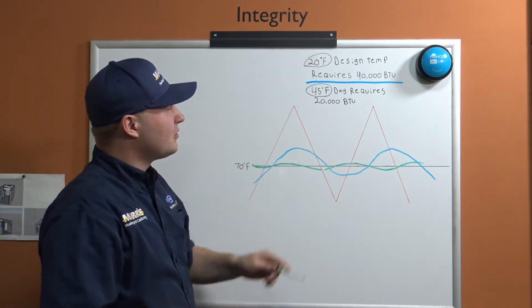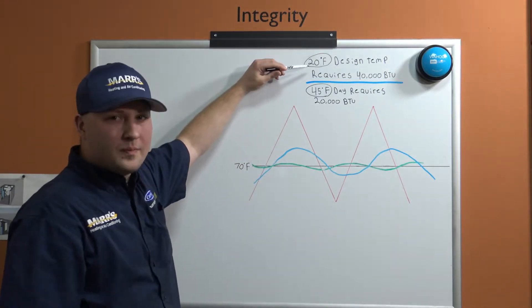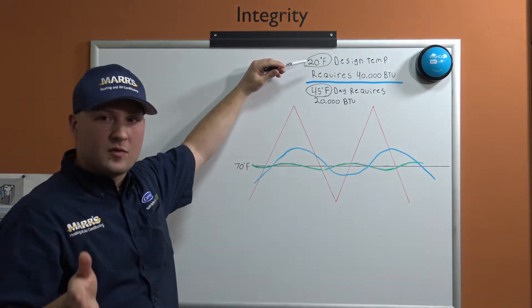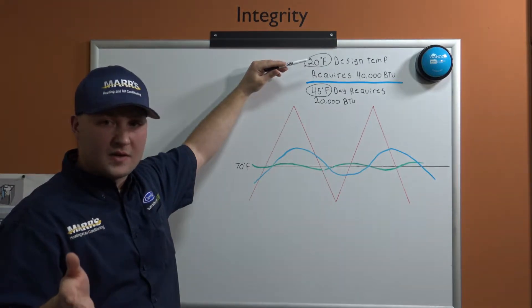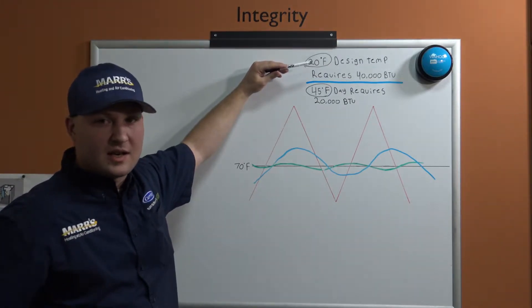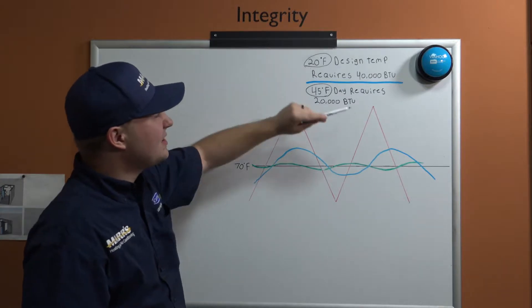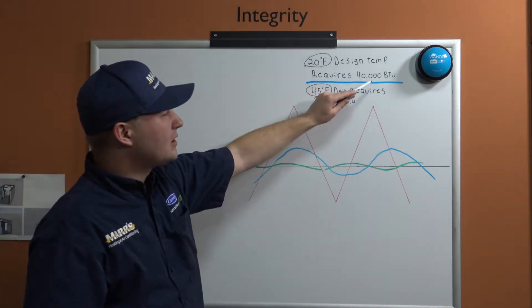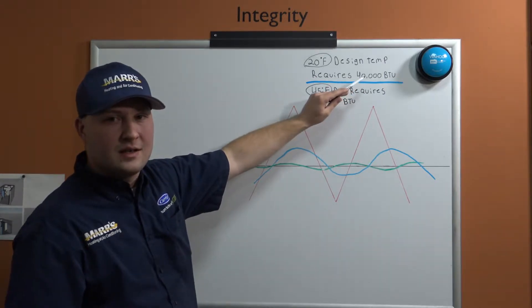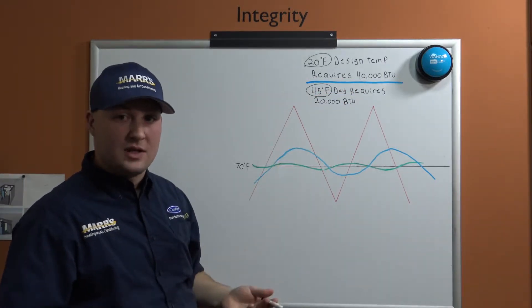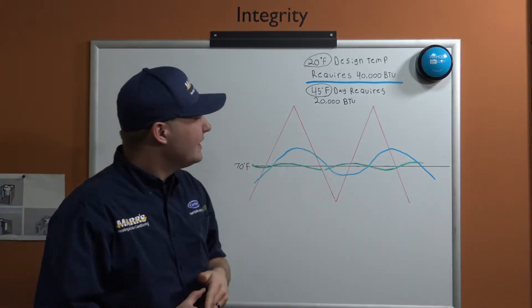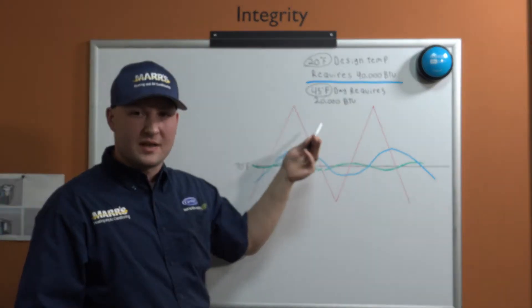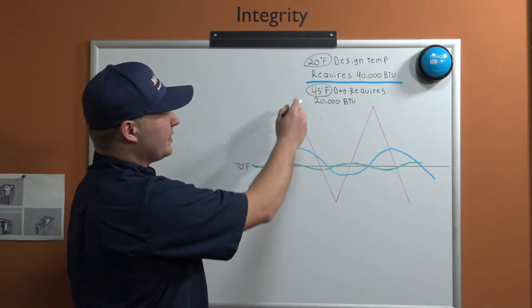At 20 degrees, your home—depending on insulation levels, the types of windows you have, how leaky the house is, how much air infiltration is getting in—let's say that this house at 20 degrees Fahrenheit requires 40,000 BTUs of heat to maintain 70 degrees indoor temperature. At 45 degrees that house only needs 20,000 BTUs to maintain 70 degrees.